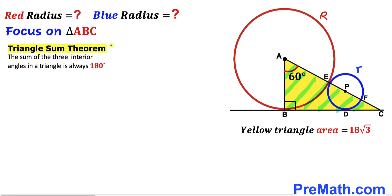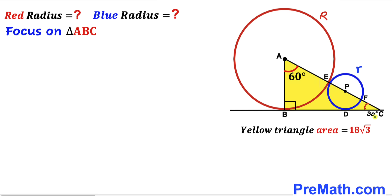Now let's recall the triangle sum theorem. According to this theorem, the sum of three interior angles in a triangle is always 180 degrees. So in the yellow shaded triangle ABC, if angle BAC is 60 degrees and angle ABC is 90 degrees, then the angle BCA has to be 30 degrees.